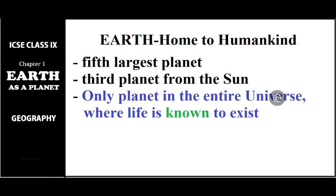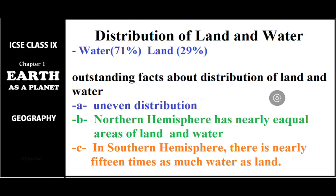One of the important factors is the availability of water on earth. Before going to the factors which support life, let's look at the distribution of land and water on earth. If we take the surface of the earth, 71 percent of the surface is covered with water — almost two-thirds — and the remaining 29 percent is land.